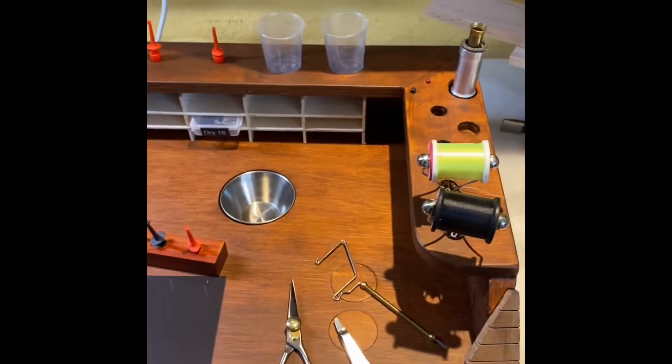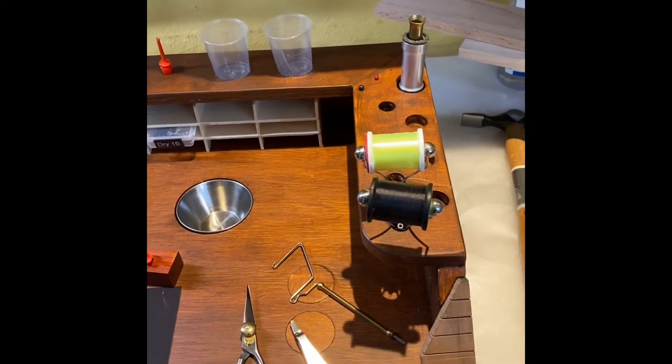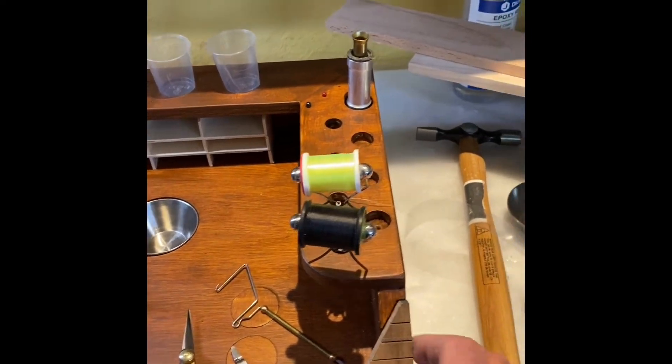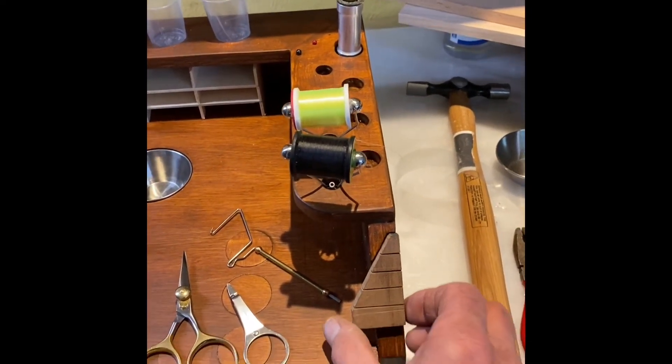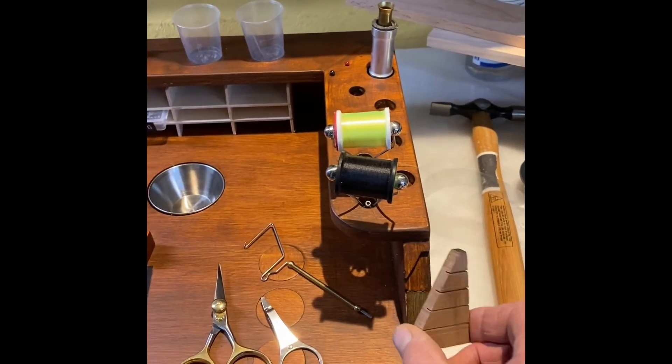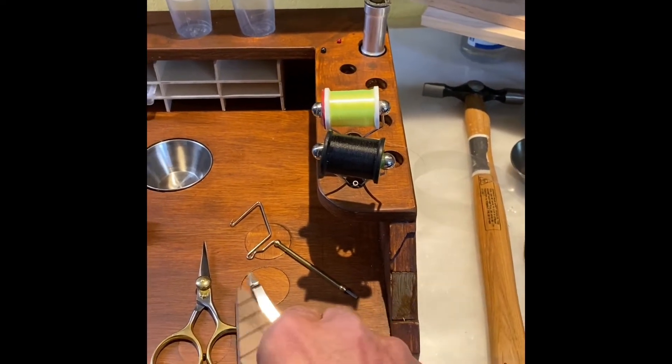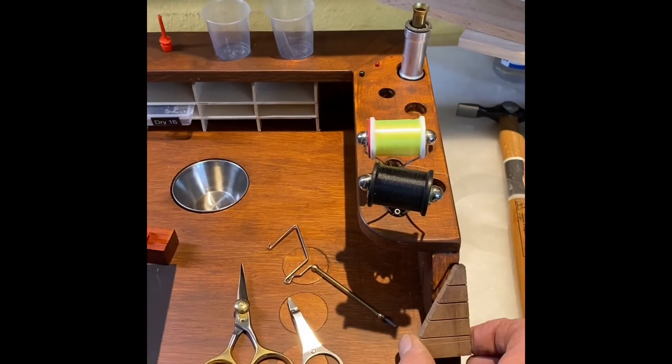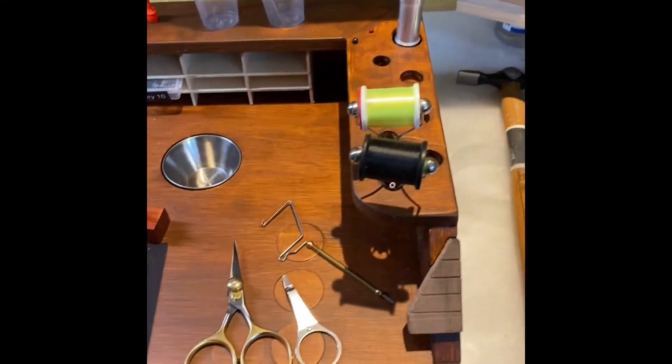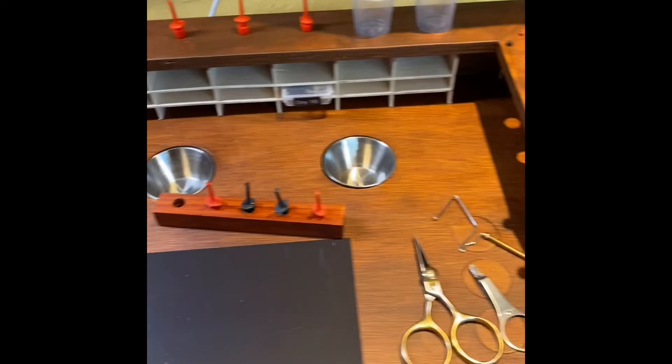So that's project number one. Oh yes and then there's a little feather bender for CDC feathers to bend those. This is magnetic as well so you can take it off. It'll stick onto the back as well should you want to do so. So that's version number one.